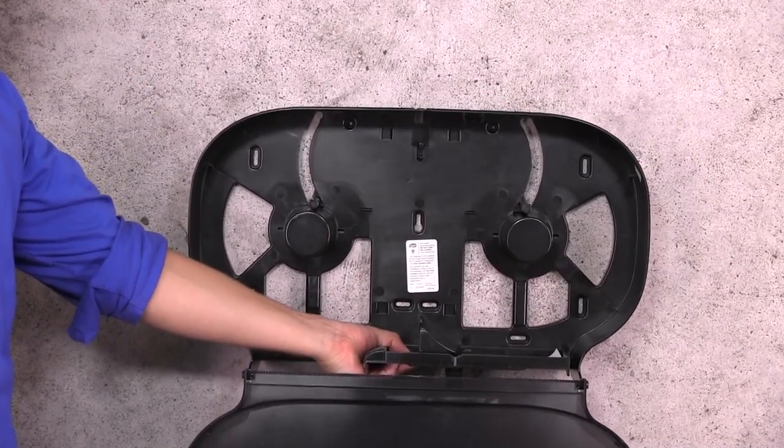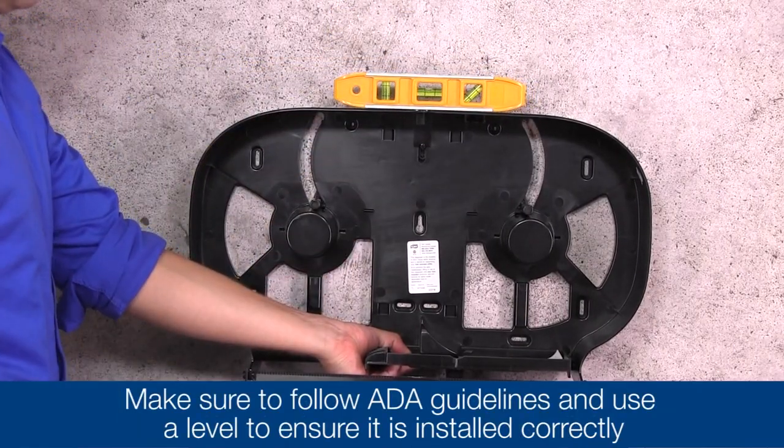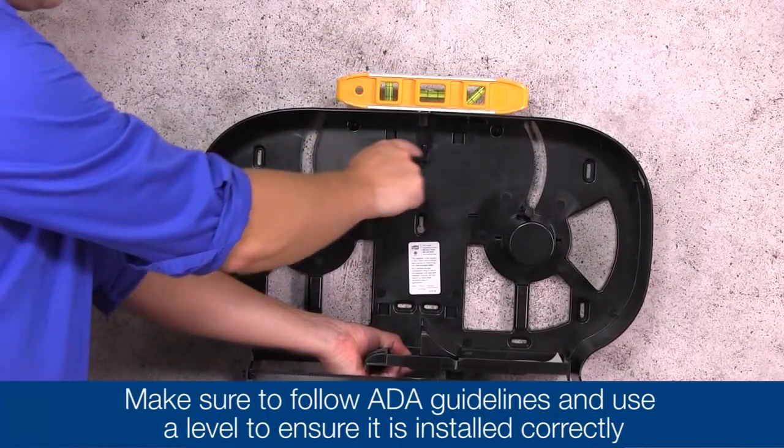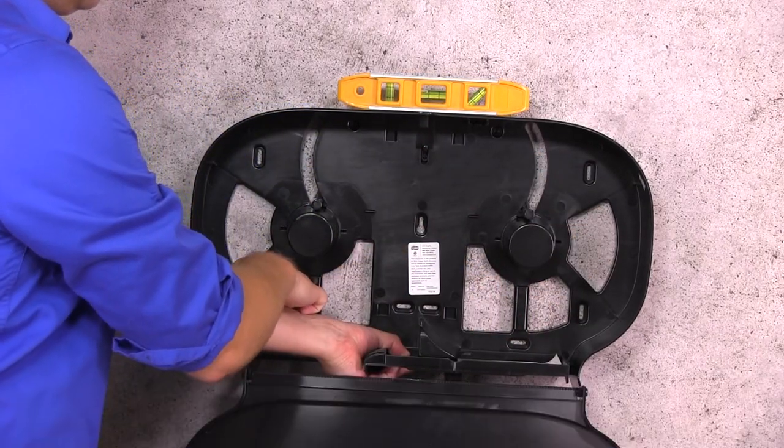Determine the position of the unit on the wall. Make sure to follow ADA guidelines. Use a level to ensure it is installed correctly, which will help ensure proper dispensing.